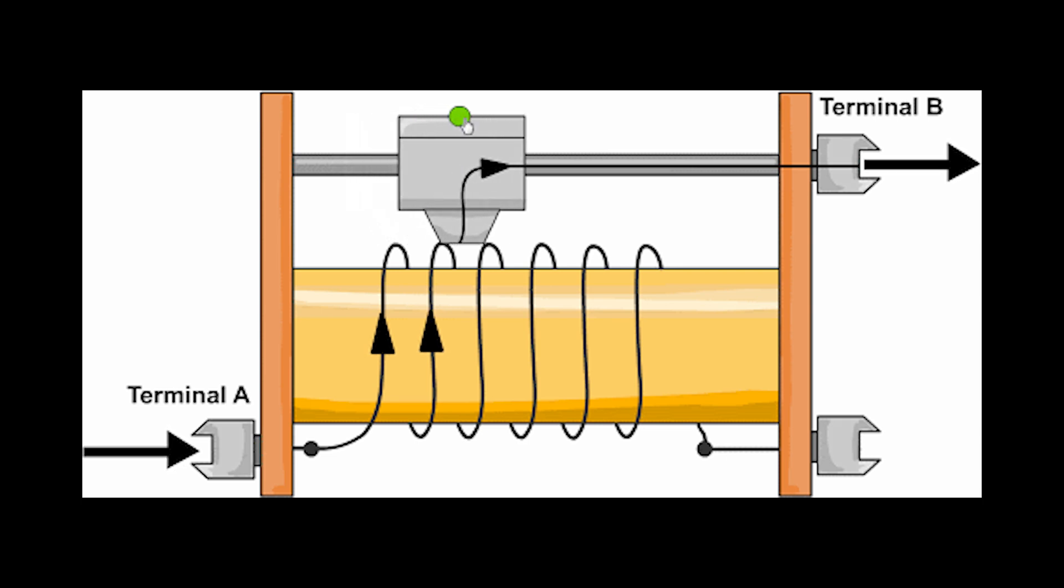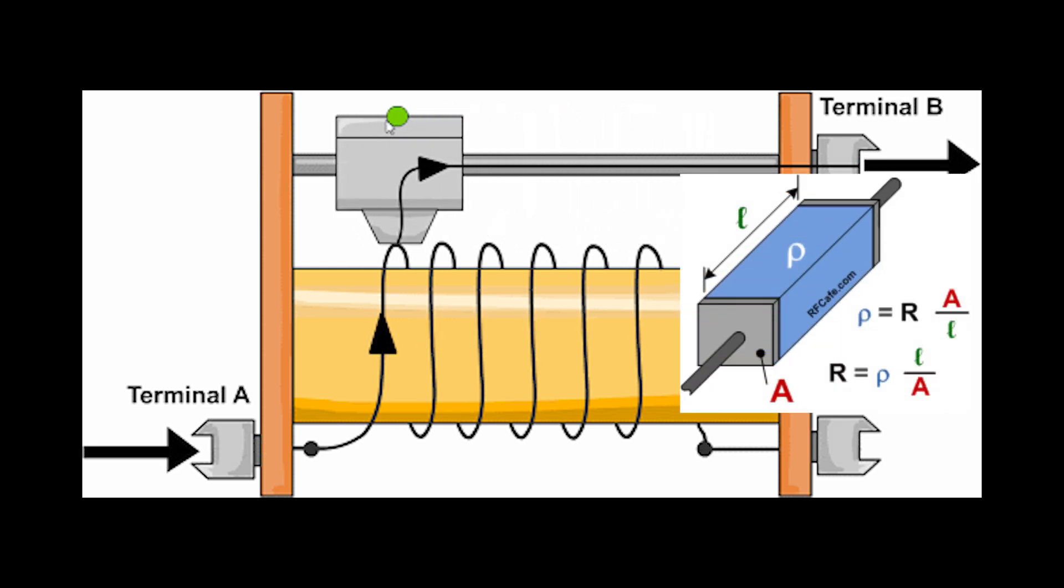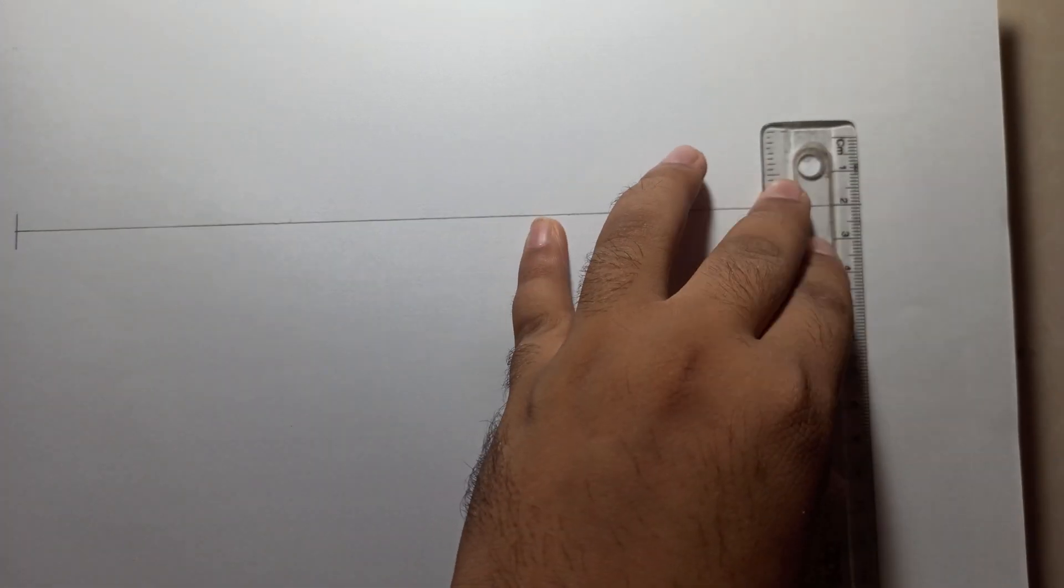While creating linear pots is as simple as taking a uniform resistive element and moving the wiper across, this can be obviously understood with the formula R equals ρL by A, that is resistance is directly proportional to its length.